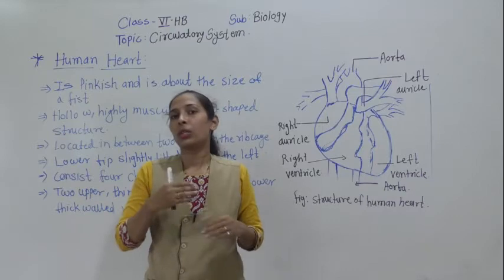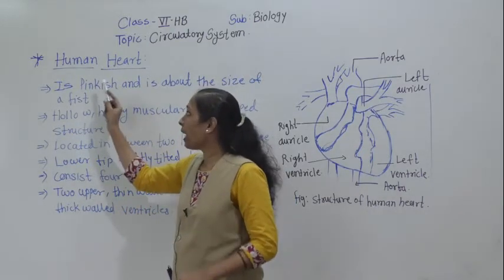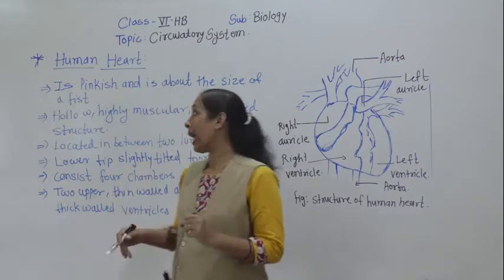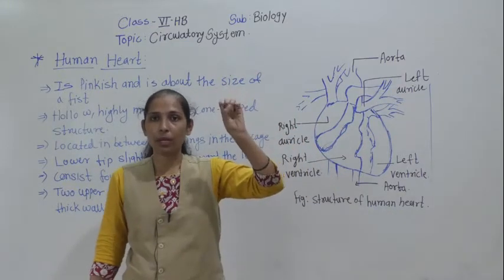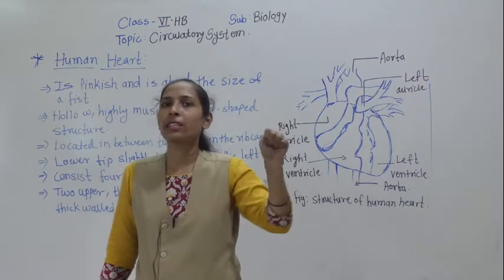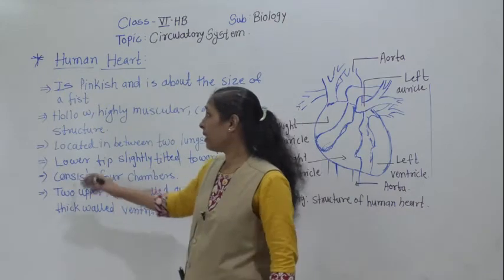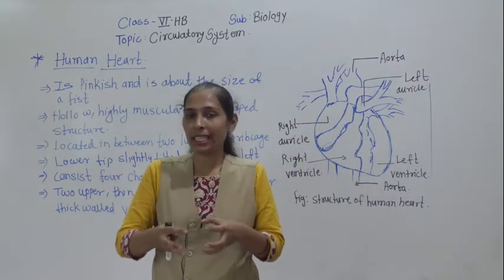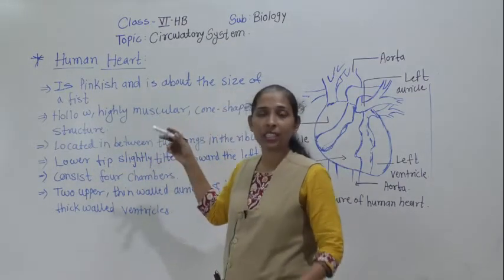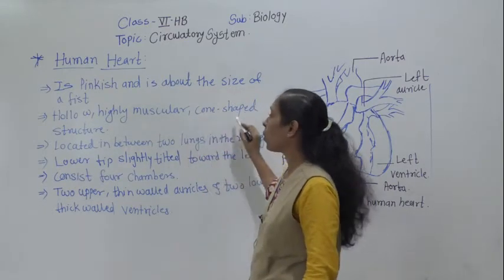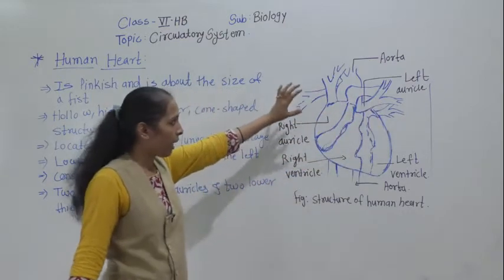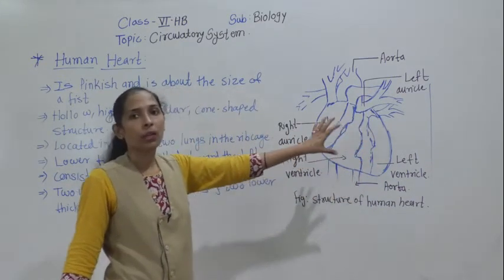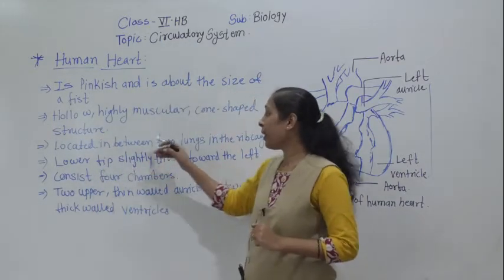The human heart continuously pumps blood throughout our lives. The human heart is pinkish in color and about the size of a fist — if we close our palm, that is roughly the size of our heart. It is a hollow, highly muscular, cone-shaped structure. I have drawn a rough diagram of the human heart here showing its cone shape.